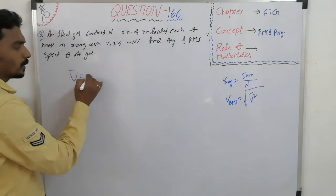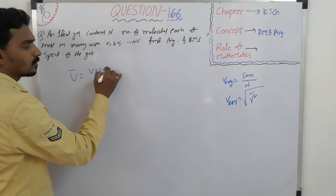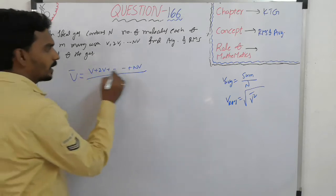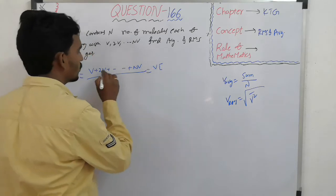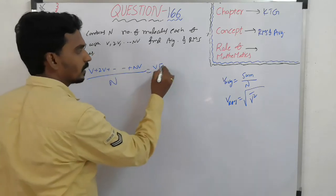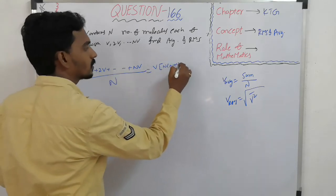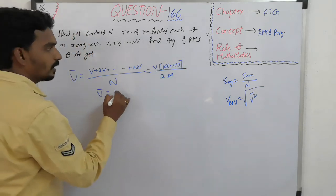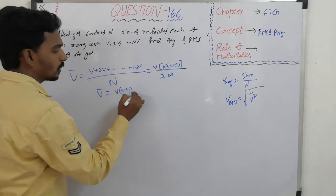So what is the average speed? Add all of them, sum divided by total number. And here if you take V common, 1 plus 2 plus 3 plus dot dot dot n, sum of natural numbers, divided by 2, n, n cancel. So the average speed is V into n plus 1 by 2.